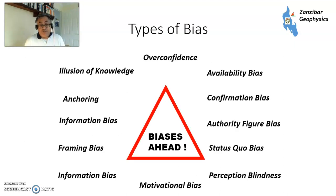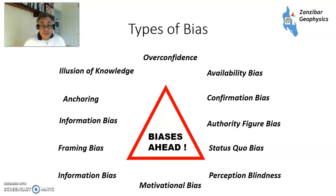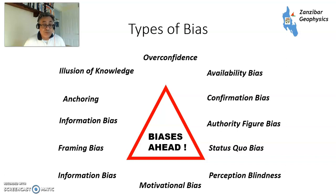There are different types of biases that we could have. They're all listed here, and I'll go through some of them: anchoring, information bias, framing bias, status quo bias, authority figure bias, confirmation bias, and perception blindness. The one at the bottom — motivational bias — is probably actually one of the most significant ones, and I'll come to that last.